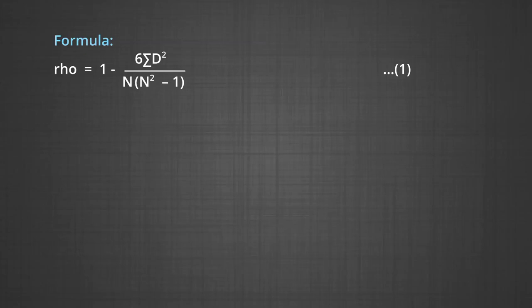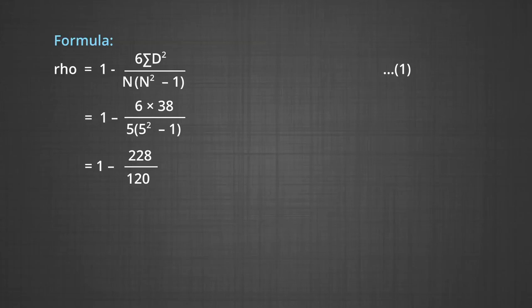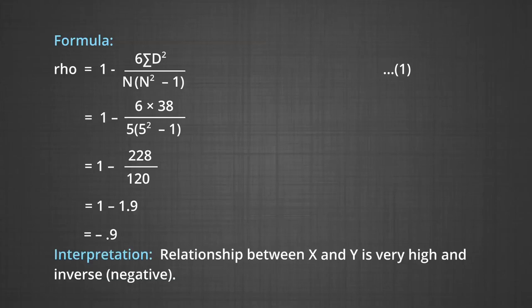The formula for calculating Rho is: 1 minus 6 times sigma D squared, divided by n times (n squared minus 1). Substituting the values from the table, it is 1 minus (6 times 38) divided by (5 times (5 squared minus 1)), which gives 1 minus 228 divided by 120, then 1 minus 1.9, which equals minus 0.9. The interpretation is that the relationship between X and Y is very high and inverse, that is, negative.